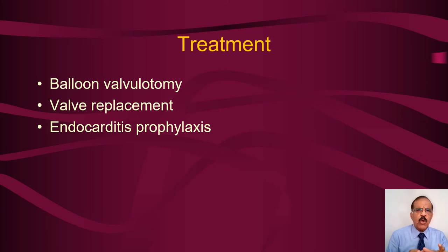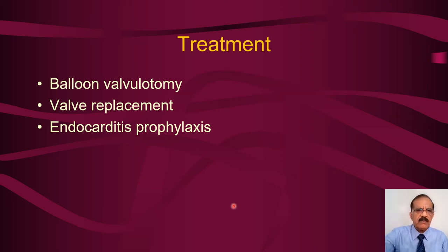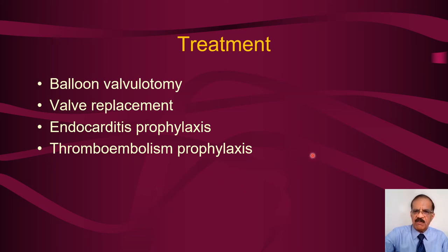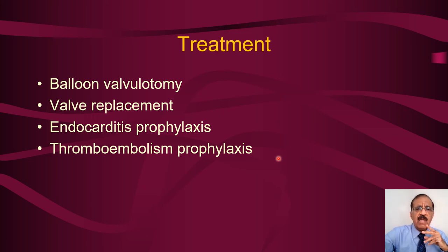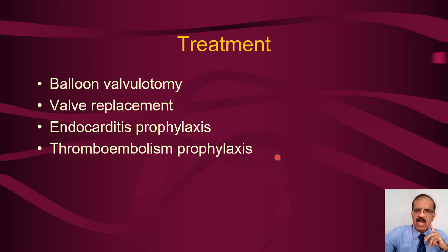Although some cardiologists have stopped practicing endocarditis prophylaxis, we still practice it. Regarding thromboembolism prophylaxis: with valvular disease, turbulent flow creates the possibility of clot formation, which may dislodge to the brain or peripheral limbs. These patients are given anticoagulation; despite many new anticoagulants available, if somebody has valvular heart disease the anticoagulant of choice is still warfarin — especially if the patient also has a rhythm disorder.